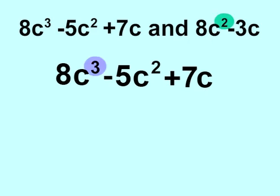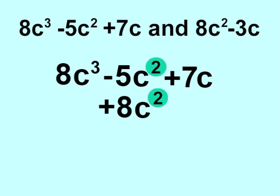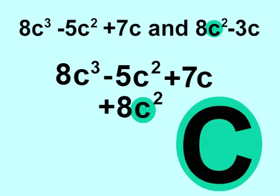This means the little numbers in the upper corners must be the same. So 8c squared can only go under the negative 5c squared. The exponents match and the variables match. Variables are letters that represent numbers, so the letter c is the variable.